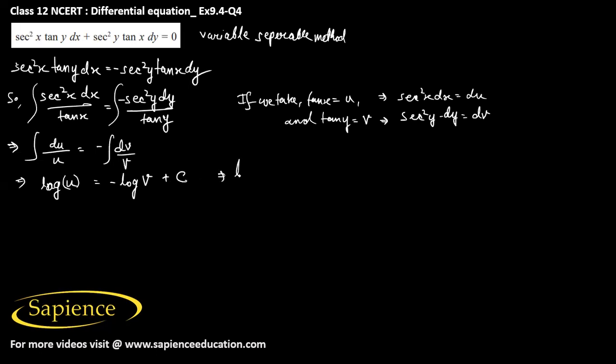So this we can write it as log u plus log v that is equals to c, or we can write it as log of uv that is equal to some constant c. So from here we can write it as u into v that is equals to e to the power c.